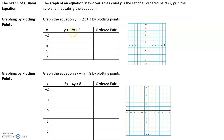Let's take the equation y = -2x + 3 and gather five ordered pairs to plot. Starting with x = -2, the x value is called the input — the value you substitute into the equation — and that gives us the output, which is the y value. So with input -2, we get y = -2(-2) + 3. Negative 2 times negative 2 is 4, and 4 + 3 = 7. So our ordered pair is (-2, 7).